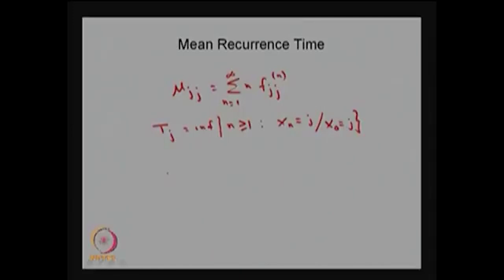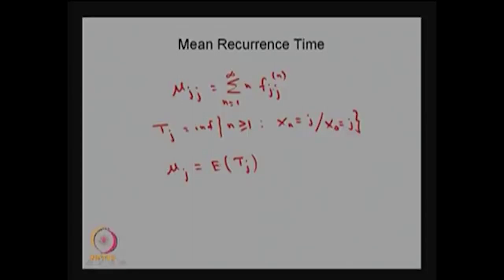Using this random variable, you can also define the mean recurrence time. I can define the mean recurrence time as mu suffix j — one suffix is enough — which is nothing but the expectation of the random variable t_j. Since t_j denotes the first return time, the expected first passage time is written as mu_j. So mu_j and mu_jj are one and the same, and in both ways one can define the mean recurrence time.